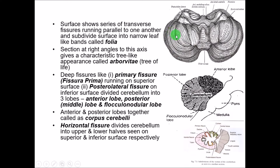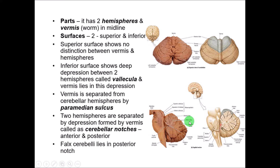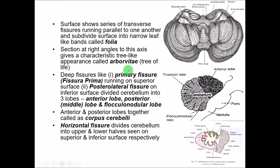The elevated areas are called foliae and the depressions are called sulci. If you take a section and view it from the lateral side, you can see a tree-like structure, which is called the arbor vitae — meaning the tree of life.